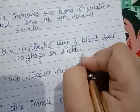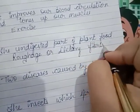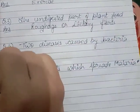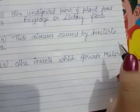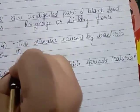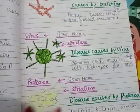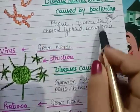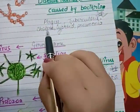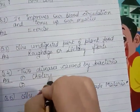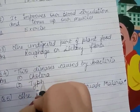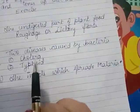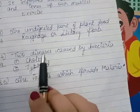The next question: name two diseases caused by bacteria. We have discussed the bacterial diseases — tuberculosis, cholera, typhoid, pneumonia — so we will write any two: cholera and typhoid. We discussed these earlier when we covered the names of diseases and their organisms.